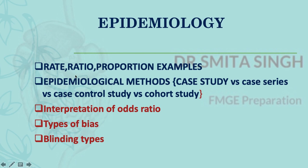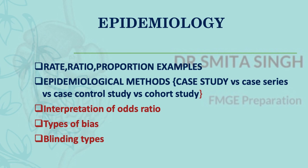In epidemiology, you need clear conceptual understanding of rate, ratio, and proportion with examples. You must be able to identify whether a given example is a rate, ratio, or proportion. For epidemiological study designs — case study, case series, case-control, and cohort study — I recommend making a comparison table with four columns, one for each study type. That's how I organized it and found it much easier to remember.